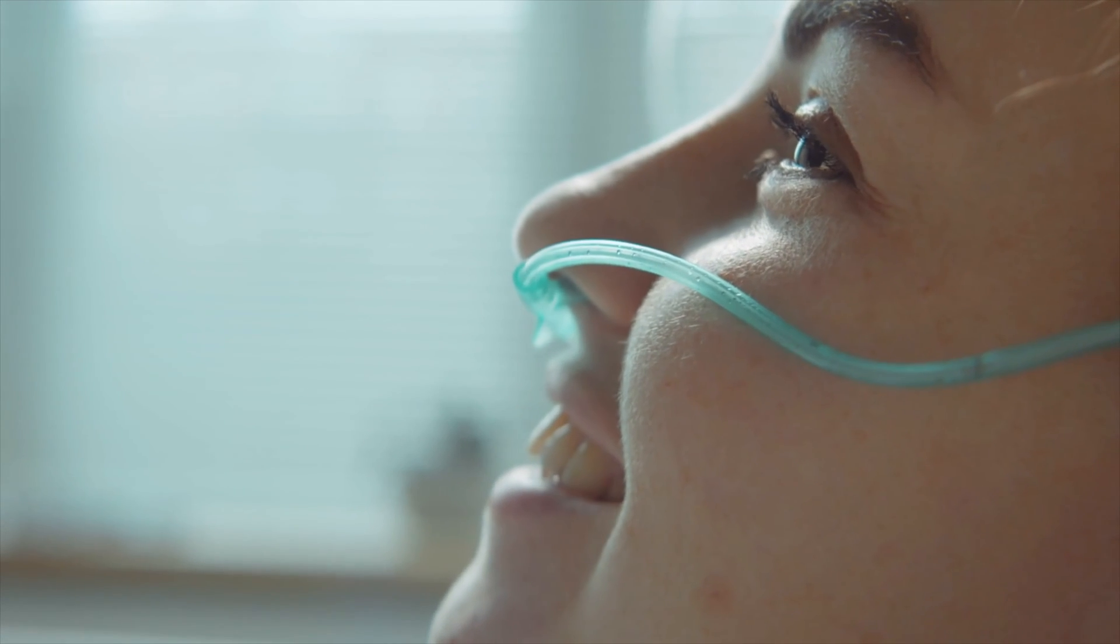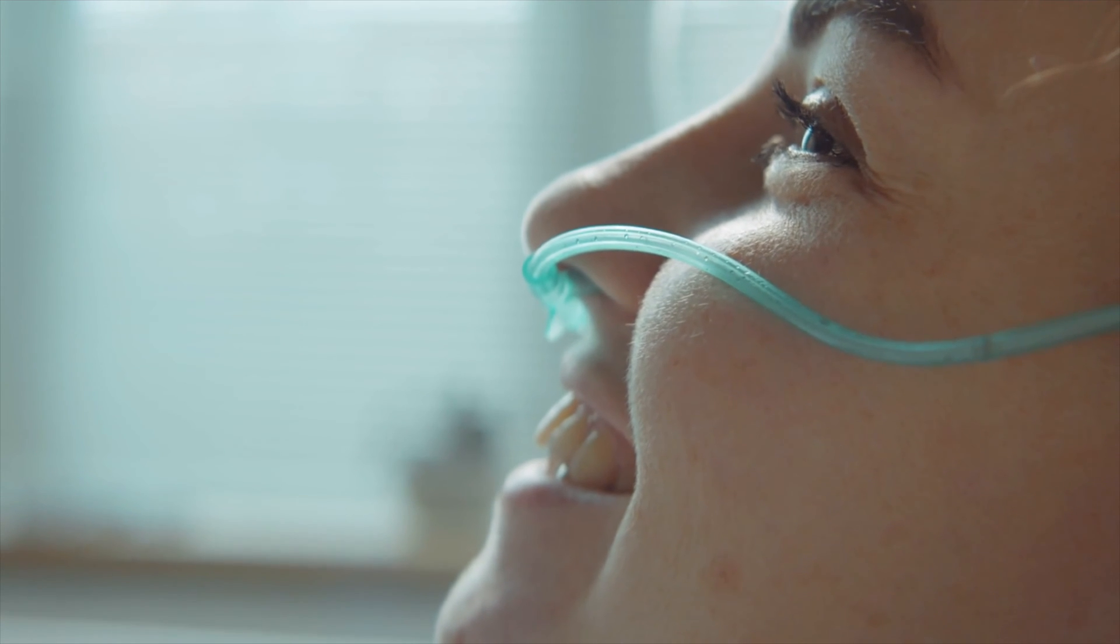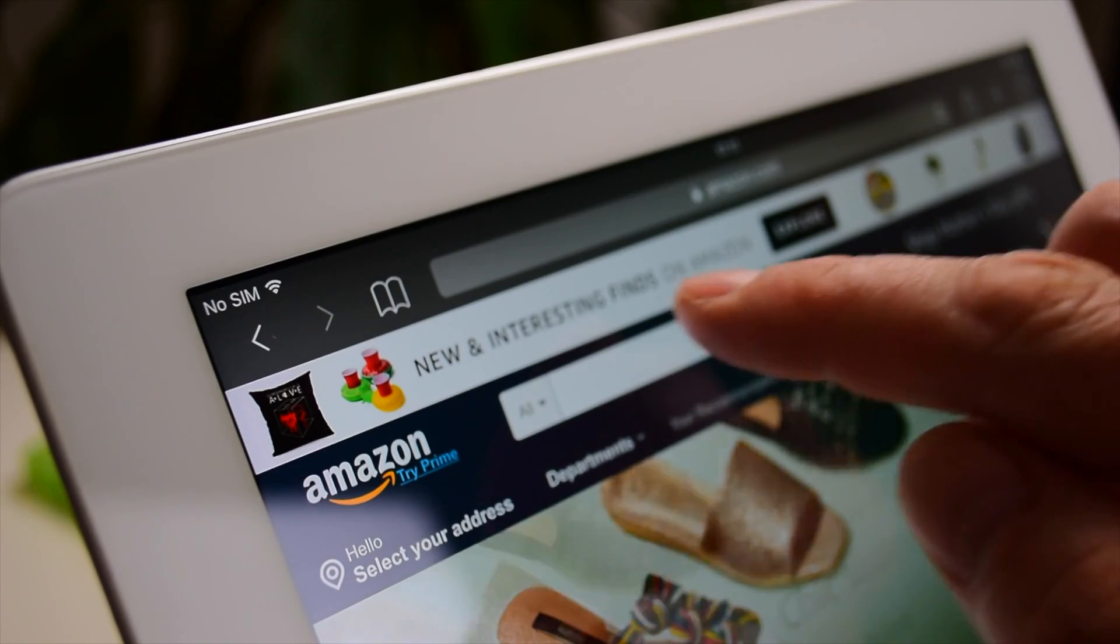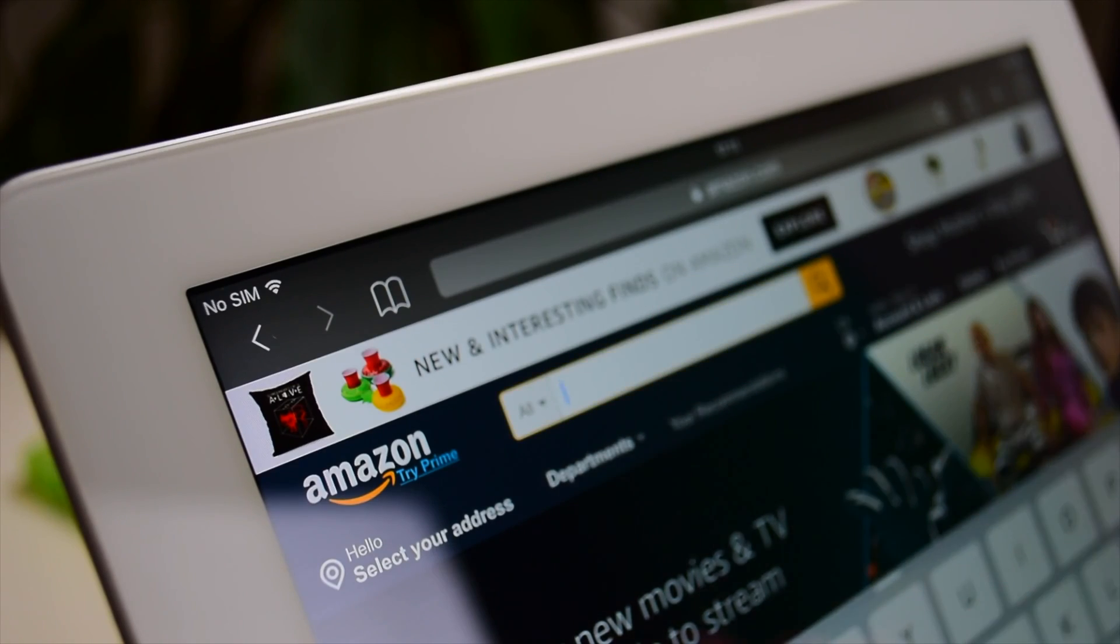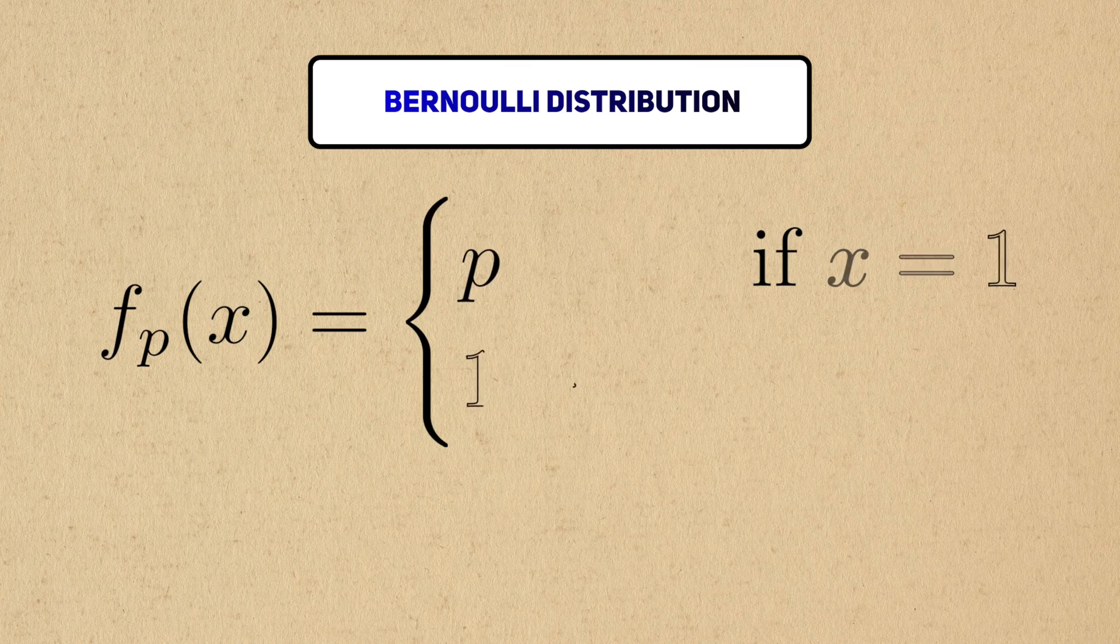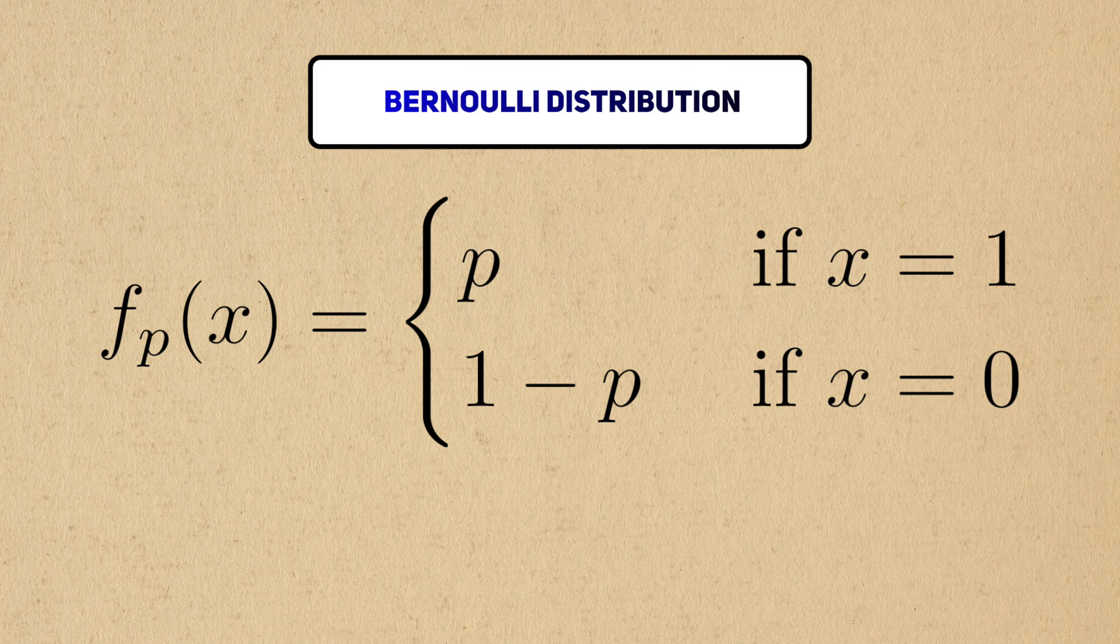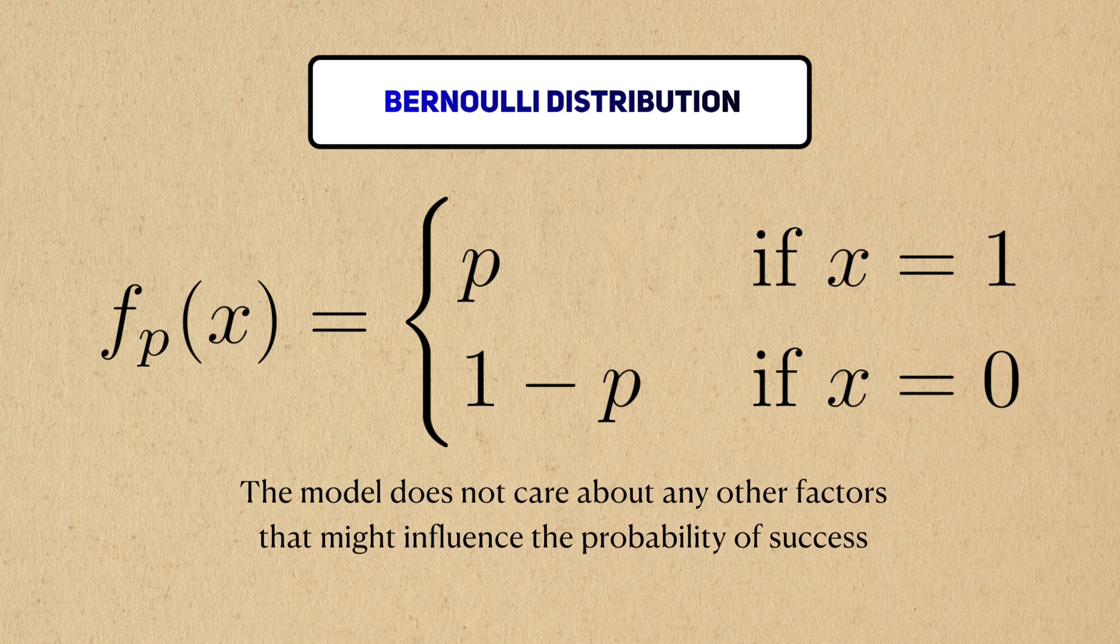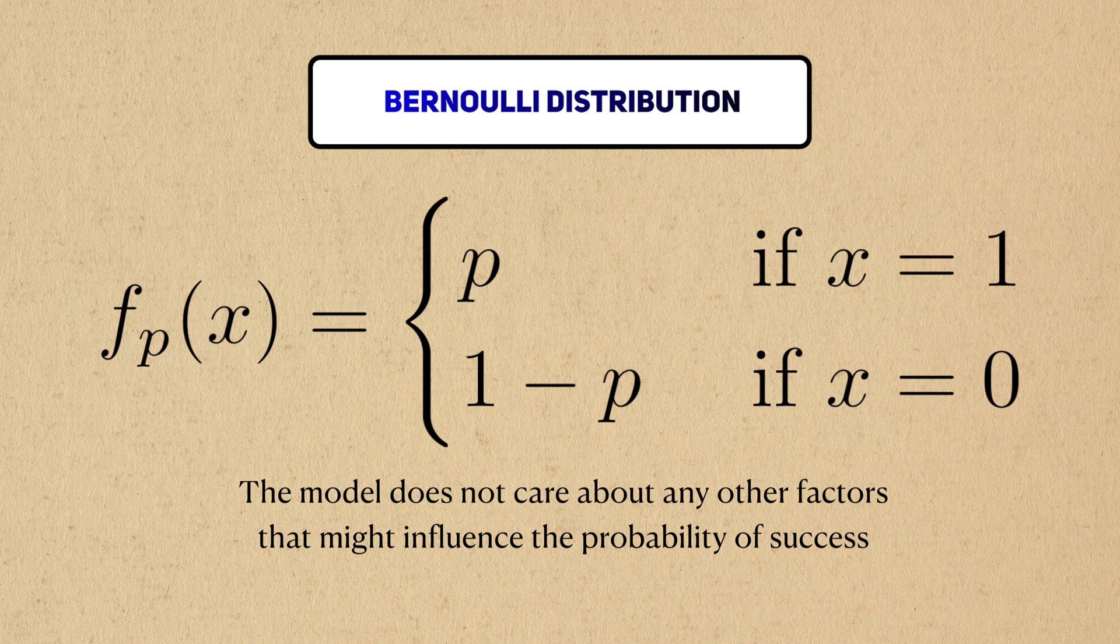Anything that's a yes or no event can be modeled with the Bernoulli distribution. In clinical trials, this could be whether or not a person responds to treatment. In A-B tests for an online platform, it could be whether or not a customer goes through with a purchase with a slight change to the user interface. As a model, the Bernoulli distribution tells us these events happen with some probability p. It doesn't care about other factors that might influence this probability. It only uses a single parameter.